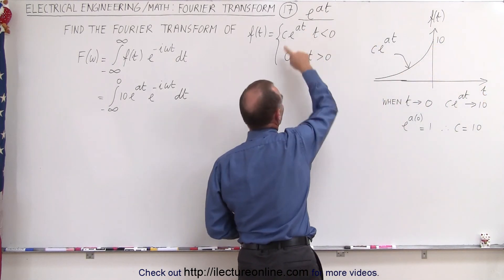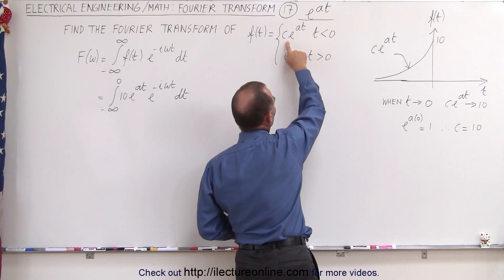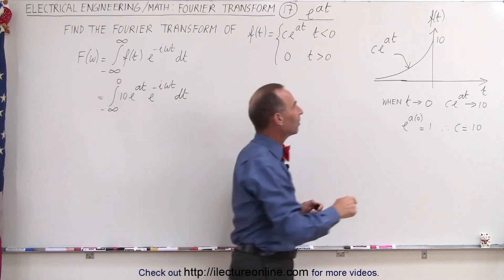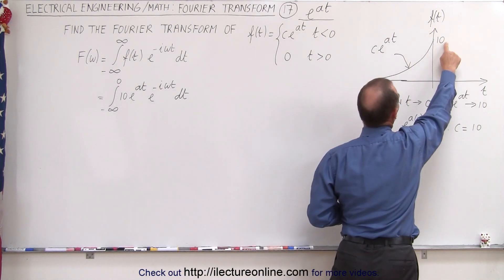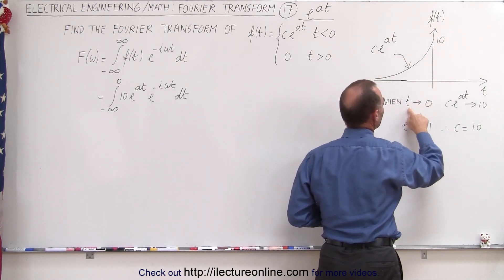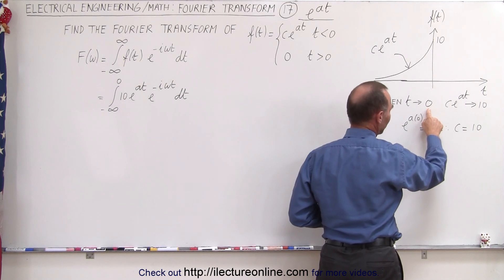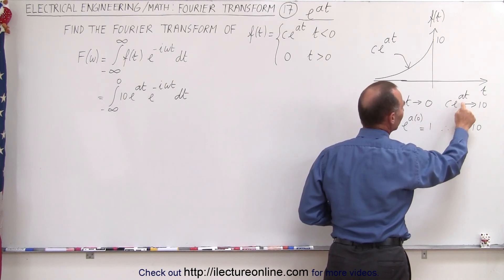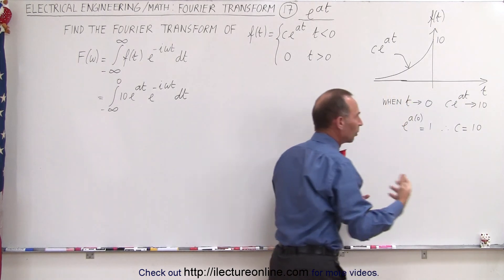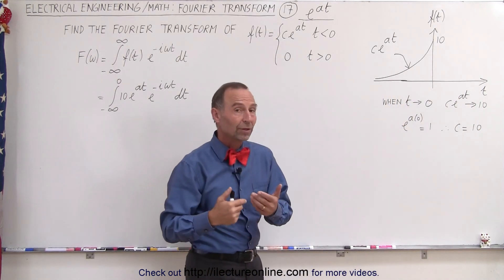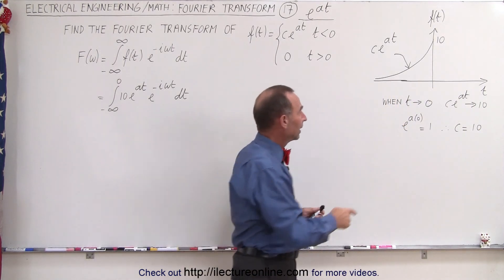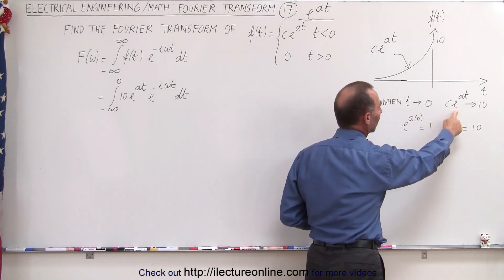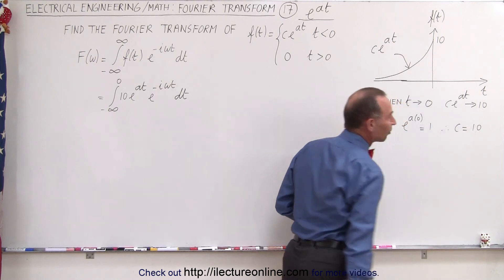Here we have the function defined. We have the function Ce to the at and we have to determine what C is equal to. We realize that the function will be equal to 10 by the time t approaches zero from the left. So Ce to the at will approach 10. When time approaches zero, e to the zero equals one, which means C times one equals 10, therefore C must equal 10.